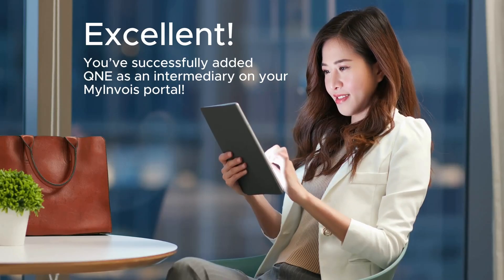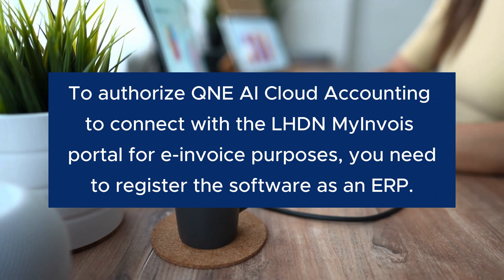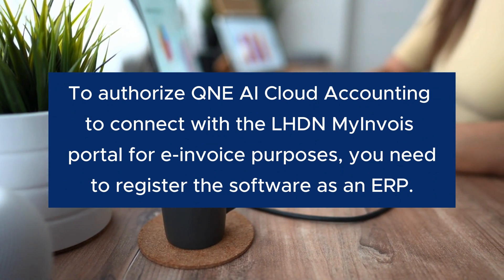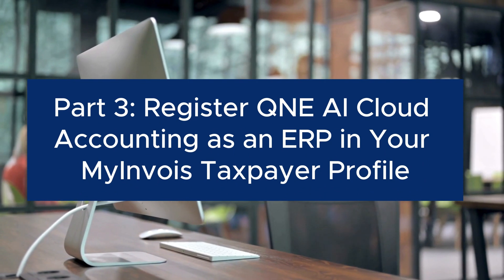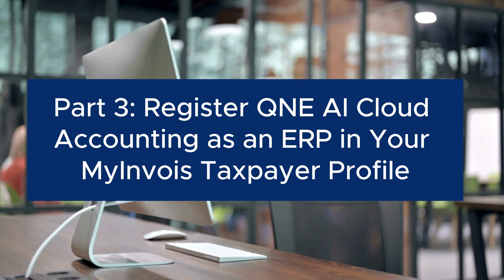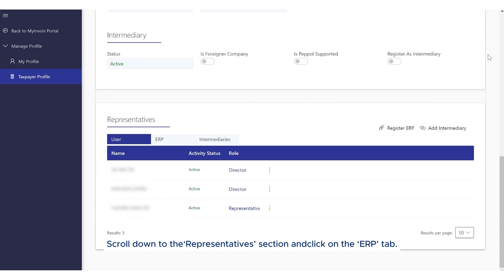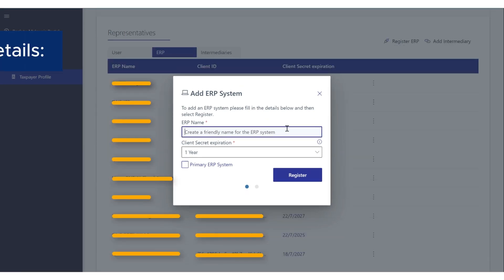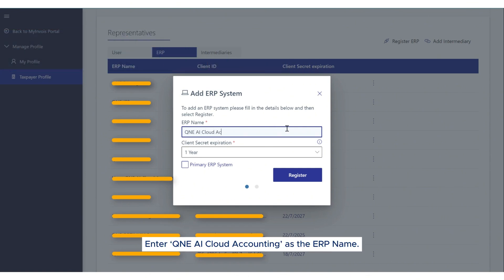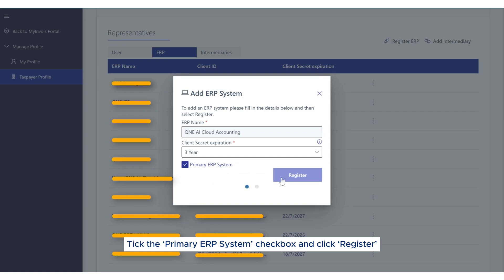Excellent! You've successfully added Q&E as an intermediary on your MyInvoice portal. To authorize Q&E AI Cloud Accounting to connect with the LHDN MyInvoice portal for e-invoice purposes, you need to register the software as an ERP. Step 1: Access the ERP registration. Scroll down to the Representatives section and click on the ERP tab. Click Register ERP to start the registration. Step 2: Add ERP system details. Enter Q&E AI Cloud Accounting as the ERP name. Set client secret expiration to 3 years. Tick the Primary ERP system checkbox and click Register.